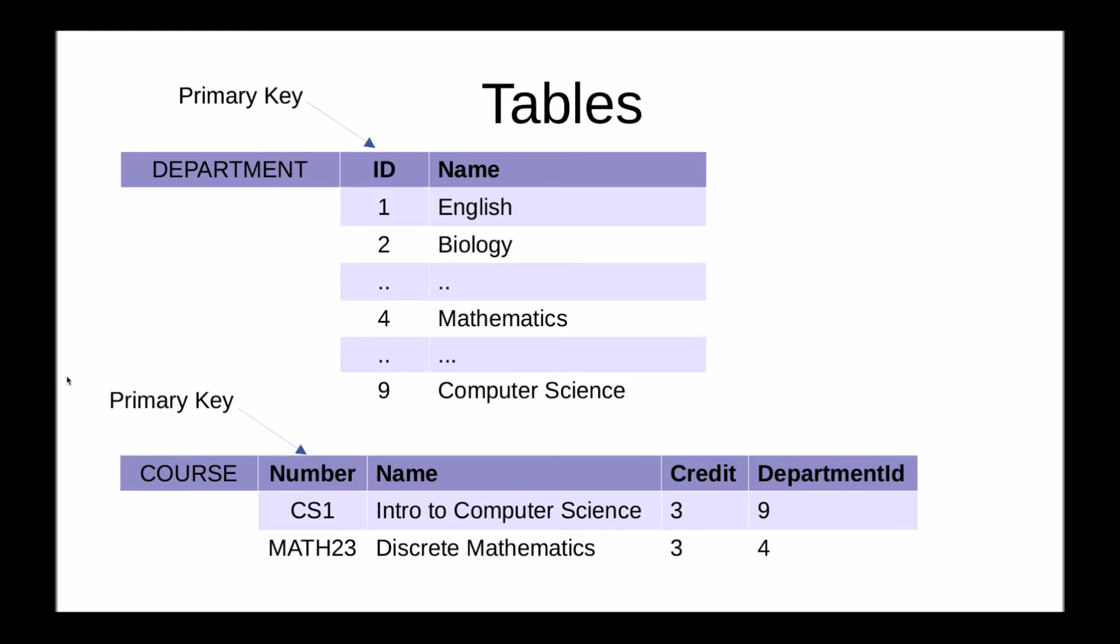In this case, we have the primary key in the department table as an ID here, and the primary key in the course table as I mentioned is the course number. There's also the concept of foreign keys. Foreign keys draw the relations between the data and tables. In this case, the course CS1 is offered by the department 9, which is a foreign key, and this ID refers to the primary key in the department table. Here, it's the department Computer Science that offers this course.